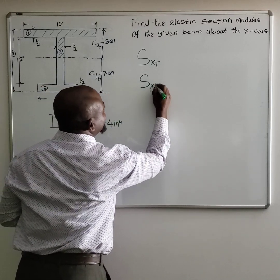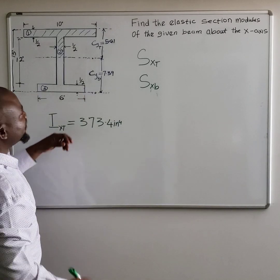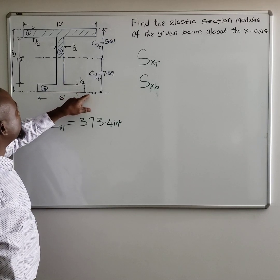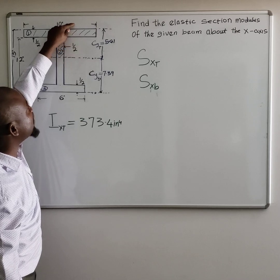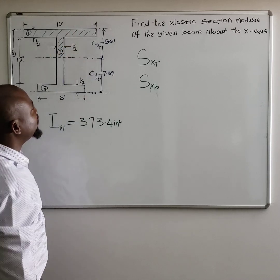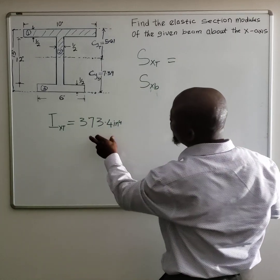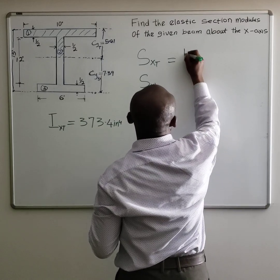So in this case we are going to solve for the two - the section modulus from the extreme fiber from the bottom to the centroid, and from the extreme fiber from the top to the centroid. So let's solve that. The two values we need are here: the moment of inertia.